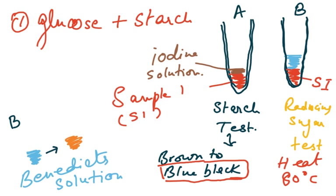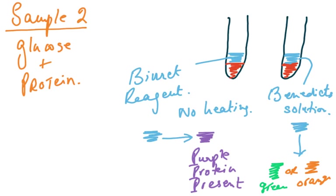For sample 2, take it in two test tubes. In one, add Biuret reagent — there is no heating required. If protein is present, the color will change to purple. If you performed this test on sample 1, there would be no color change, but with sample 2 it will turn purple.